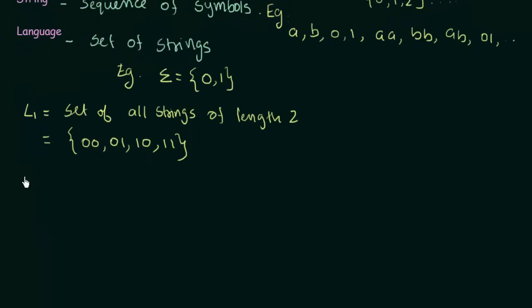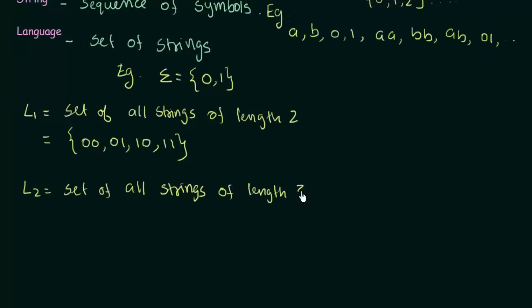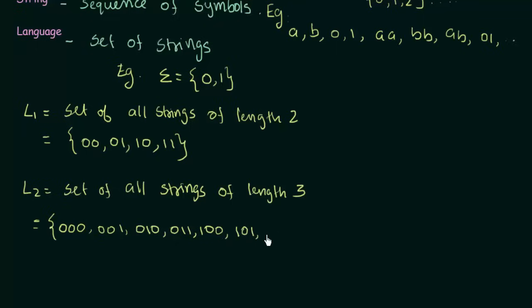Let's take another example: L2. L2 is the set of all strings of length 3 over the alphabet {0, 1}. Those strings are: 000, 001, 010, 011, 100, 101, 110, and 111. These are all the strings of length 3 over the alphabets 0 and 1.